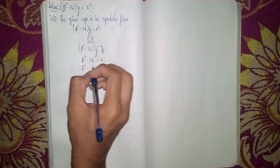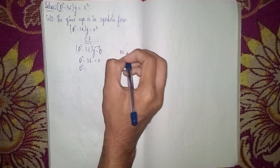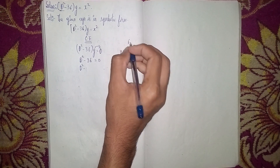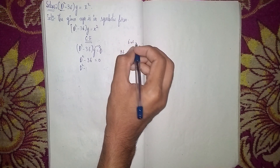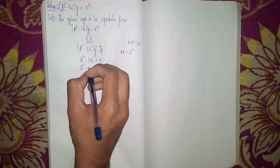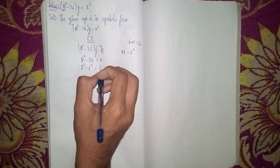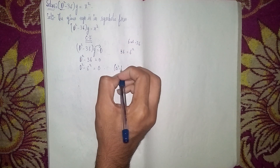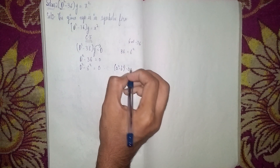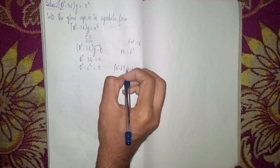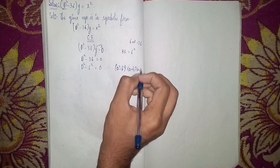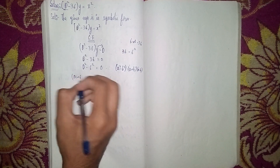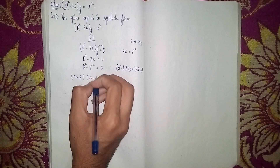Now D² - 36 can be written as D² - 6². I am making the form of A² - B² = (A + B)(A - B). So it becomes (M + 6)(M - 6).